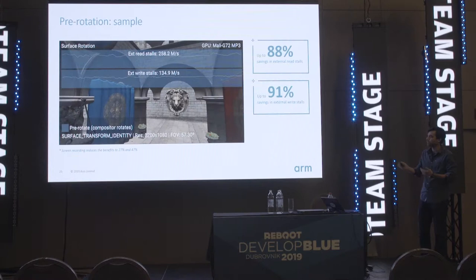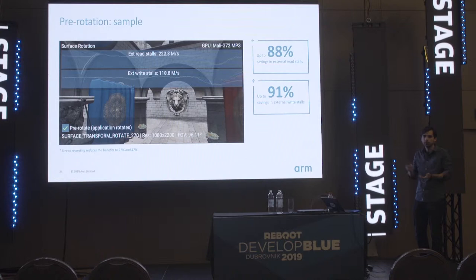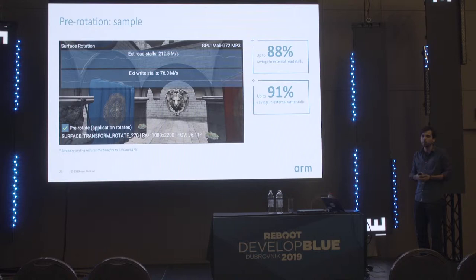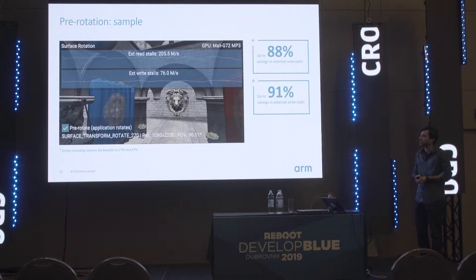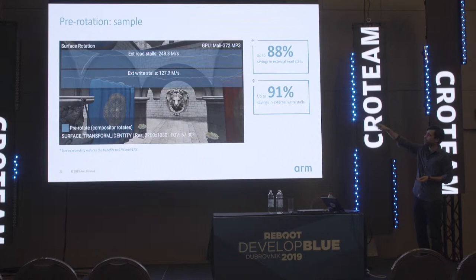This is what the sample exposes. At the bottom, we have a checkbox to enable and disable the pre-rotation path. If you are doing pre-rotation, in most cases what you are doing is modifying the projection matrix in the vertex shader, so it doesn't introduce any extra passes.